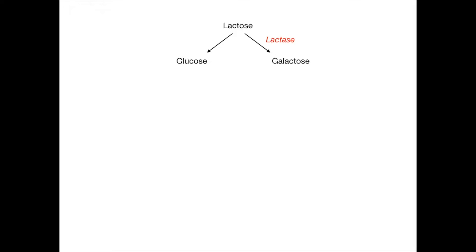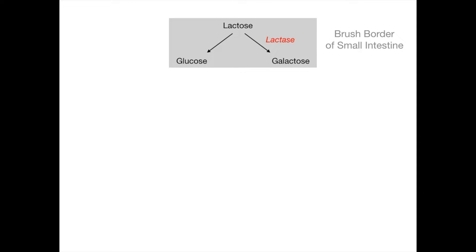Lactose is our starting material. Lactose can be converted into both glucose and galactose. The enzyme that converts lactose into galactose is lactase — it breaks down lactose. You've probably heard about lactose intolerance, which is due to a problem with the lactase enzyme. The name 'lactase' tells you it's breaking down lactose. Everything shown in the gray box is occurring at the brush border of the small intestine.